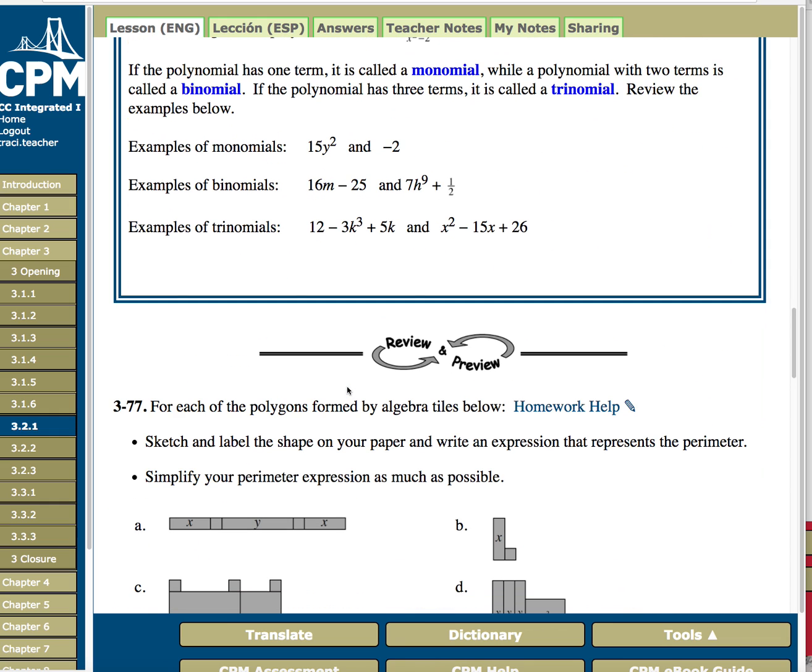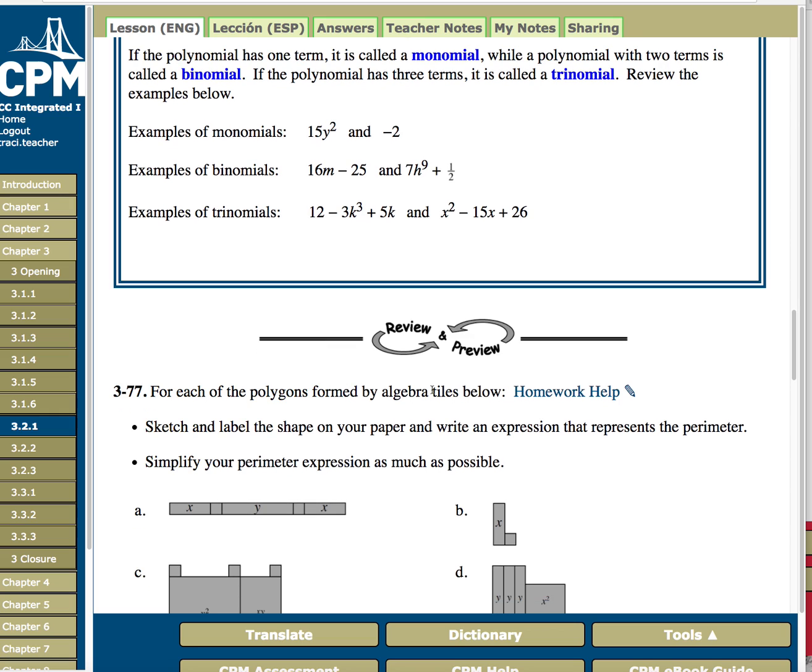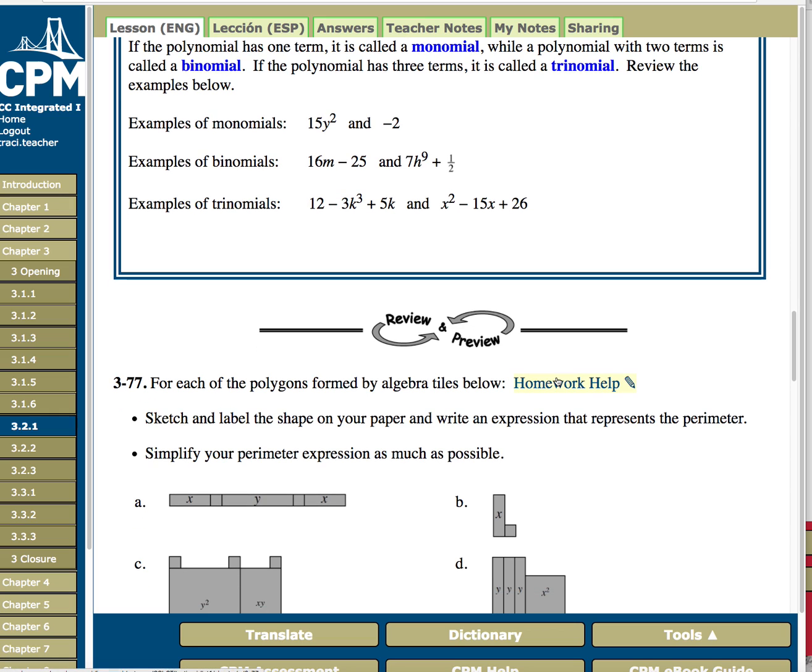And then you get to something called review and preview. With the review and preview, you will always have a link that you can get homework help on. So this homework help will take you to another site and will give you some hints sometimes. Sometimes it will give you some steps, and sometimes it will give you answers. It doesn't always give you all of them. So if you are looking, for example, for homework help, let's go ahead and look at problem 77. And we've got A, B, C, and D.